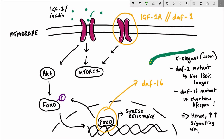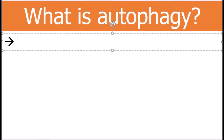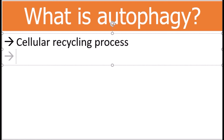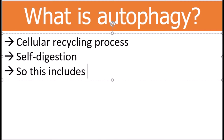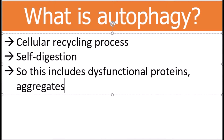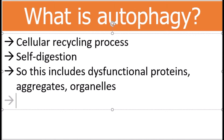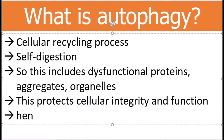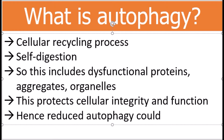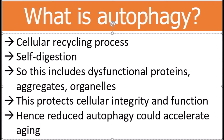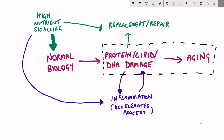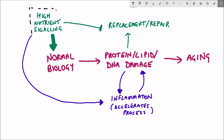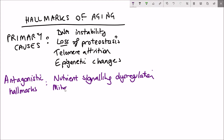The key takeaway is that when you increase the signalling response you inhibit FOXO, which increases the rate of aging — partly through a reduced rate of autophagy. Autophagy is a cellular recycling process: effectively self-digestion of damaged organelles and proteins inside the cell, protecting cellular integrity and function. Therefore reducing the rate of autophagy can accelerate the aging process. In summary, nutrient signalling dysregulation acts to accelerate the primary causes of aging.